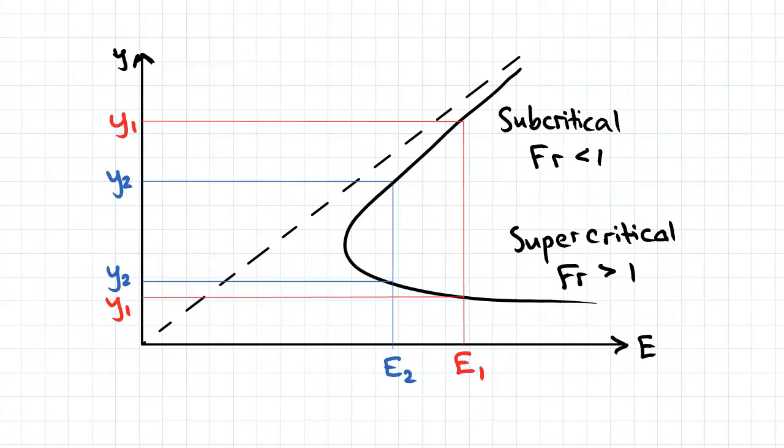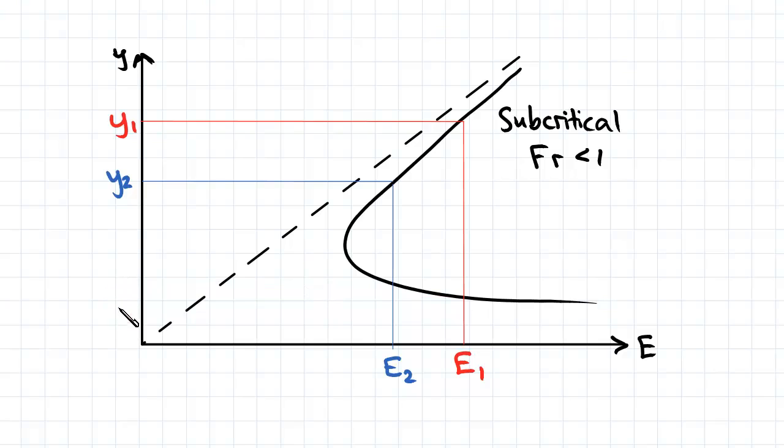So in our specific energy curve we're considering this top branch, we get rid of our supercritical flow lines and we're just considering these two top points.